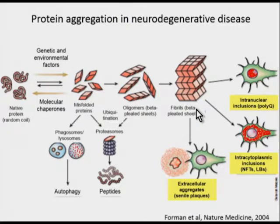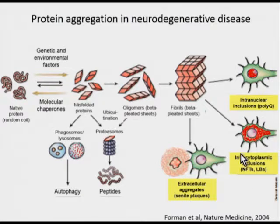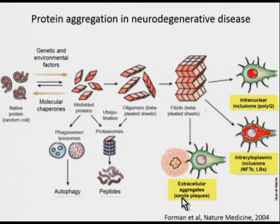These proteins can accumulate in cells in various places. In polyglutamine repeat disorders, proteins accumulate within the nucleus as intranuclear inclusions. In some states they accumulate in the cytoplasm as intracytoplasmic inclusions—for example, neurofibrillary tangles or Lewy bodies. And in some instances they aggregate outside of the cell, for example as senile plaques.